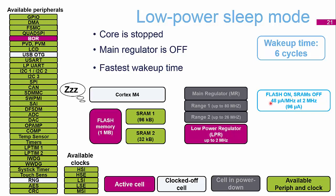Low power sleep works in exactly the same way — the core is switched off — but this time the main regulator is switched off as well. We lose two peripherals again: USB and the random number generator, because we don't have the 48 MHz clock. This puts us at about 48 µA/MHz — slightly higher than range one, but still a significant saving from the 150 µA/MHz in low power run mode.